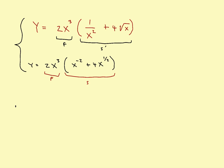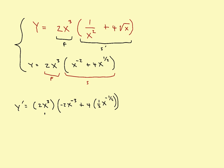So when I find the derivative, y prime would be — just say it in English as you do it — the first times the derivative of the second, which would be minus 2x to the negative 3, plus 4 times 1/2 x to the negative 1/2. So that's the first times the derivative of the second; I'm halfway through the problem. Then plus the original second — x to the negative 2 plus 4x to the 1/2 — times the derivative of the first, which would be 6x squared.